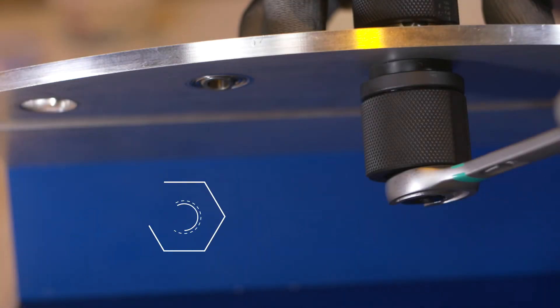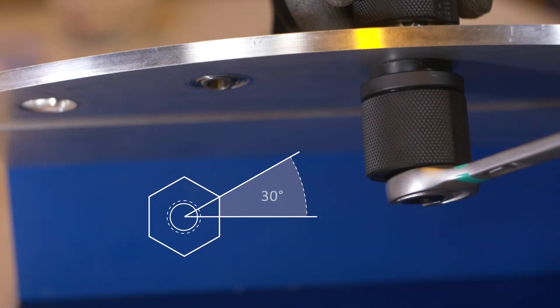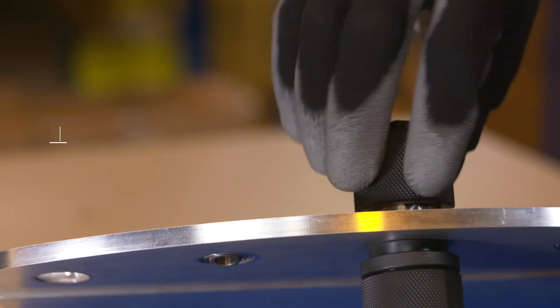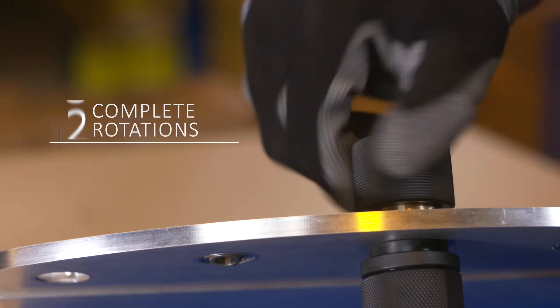For the primary swage, tighten the hex nut clockwise approximately 30 degrees. Then rotate the roller fixture assembly approximately three complete rotations.